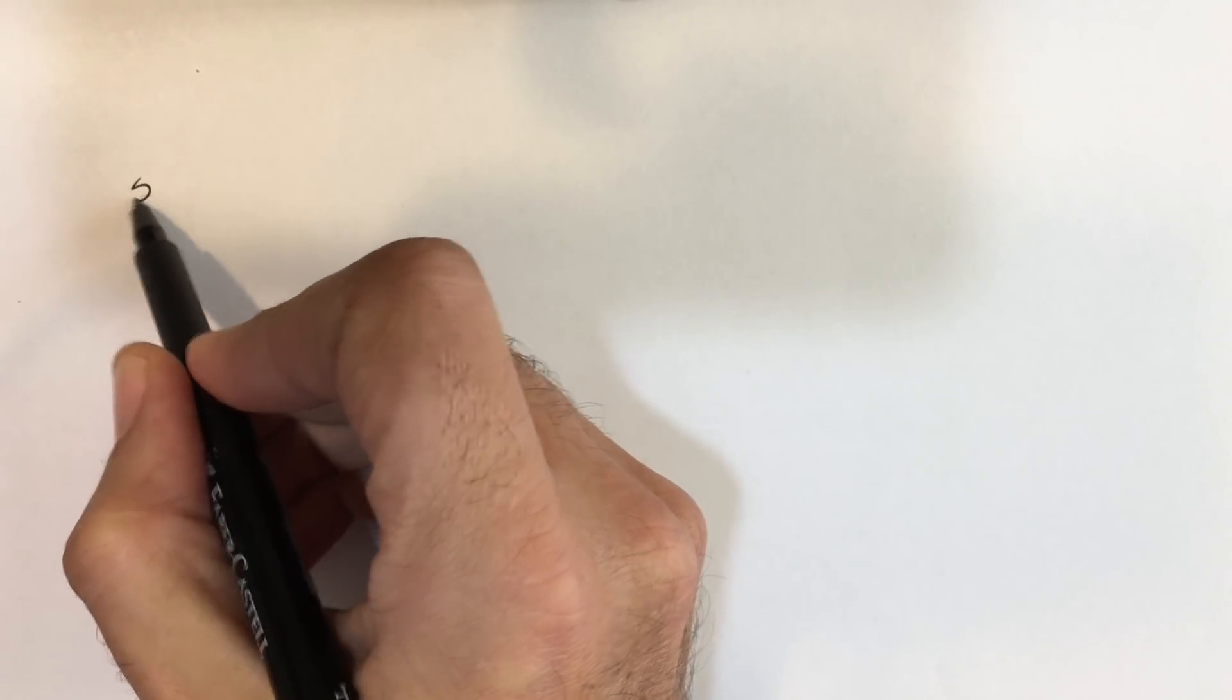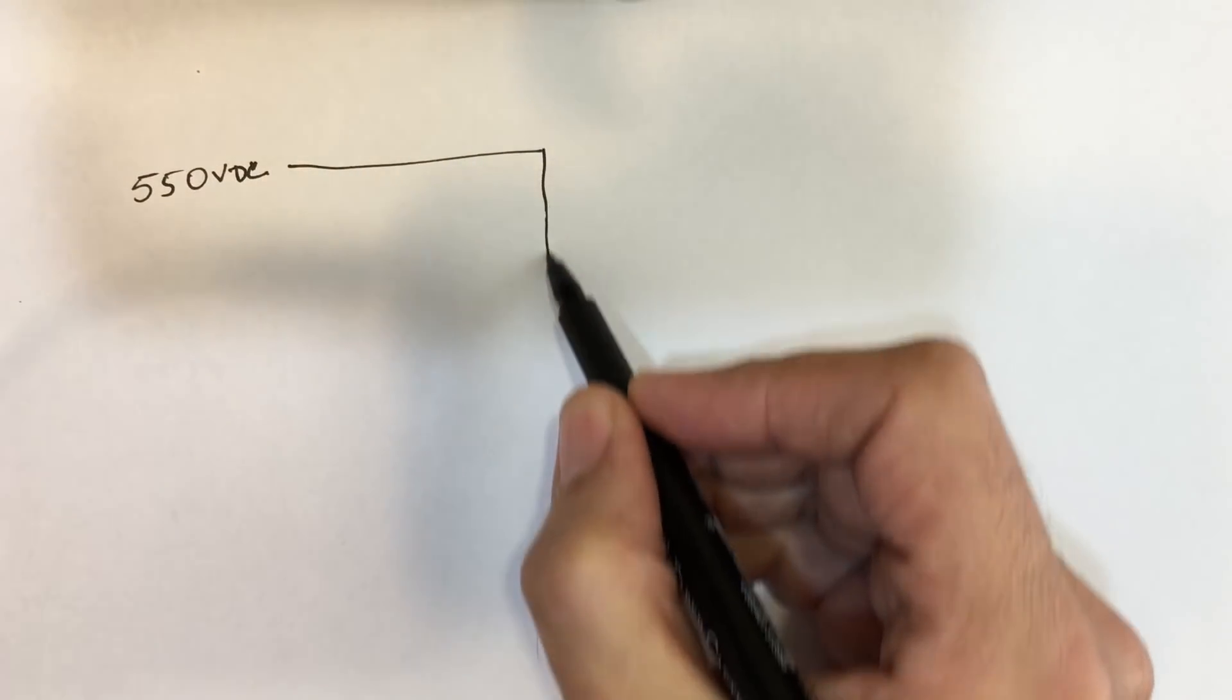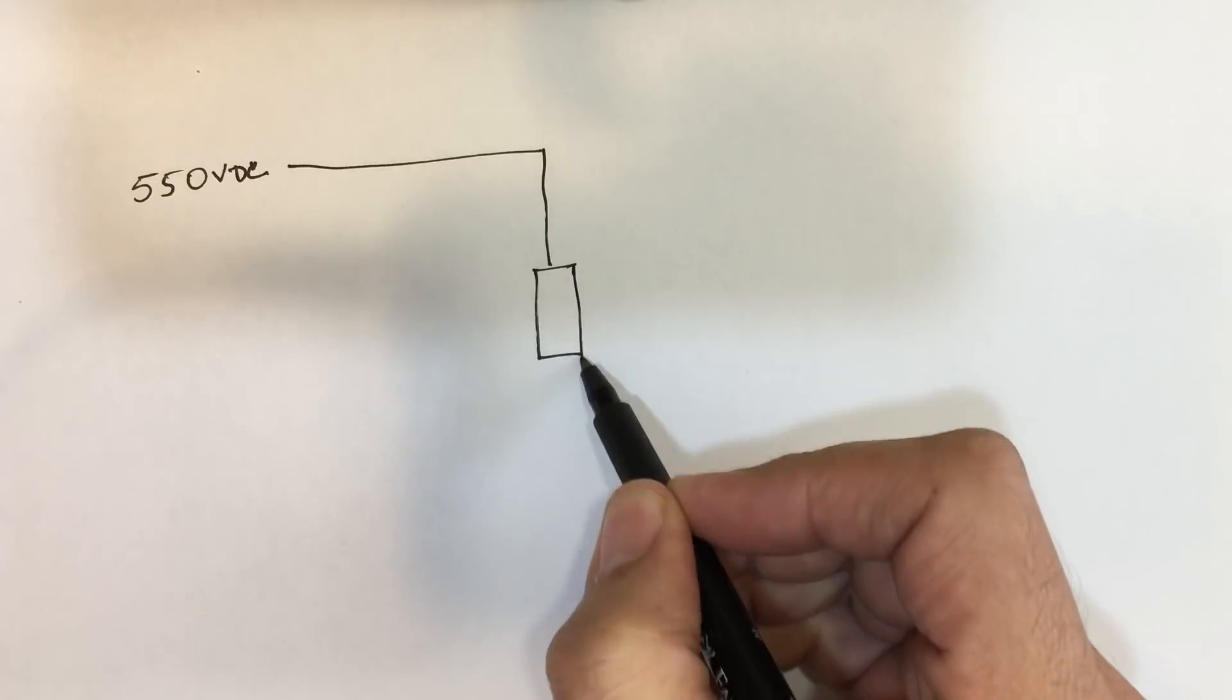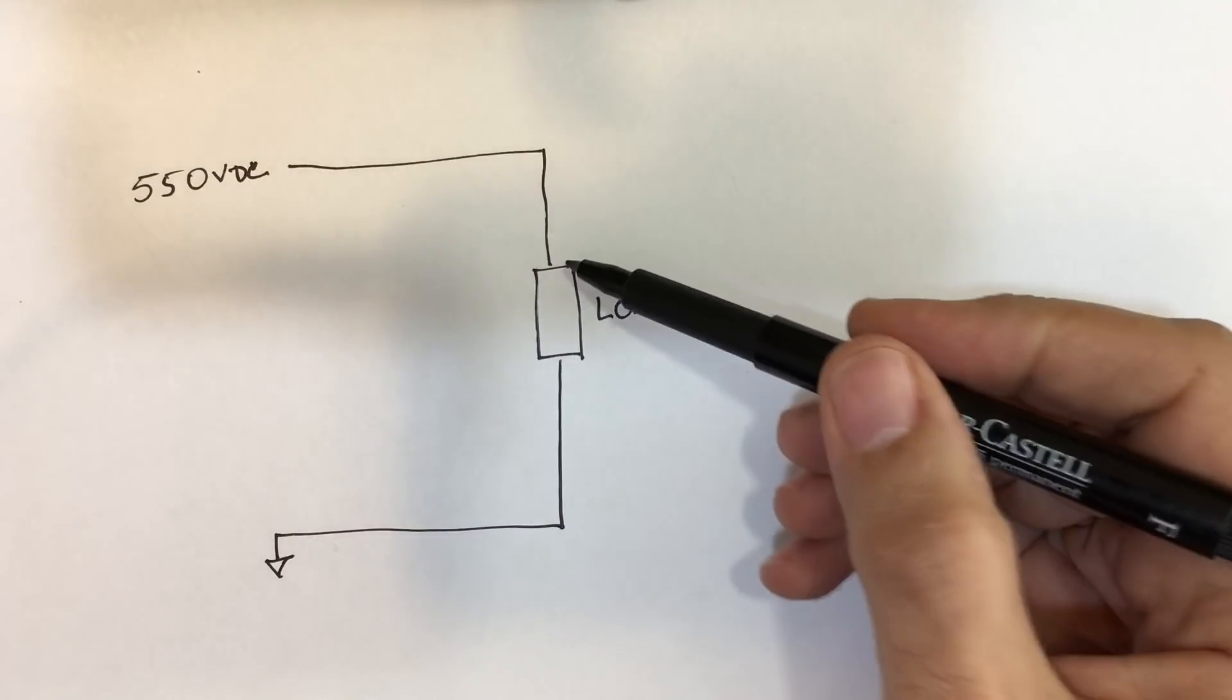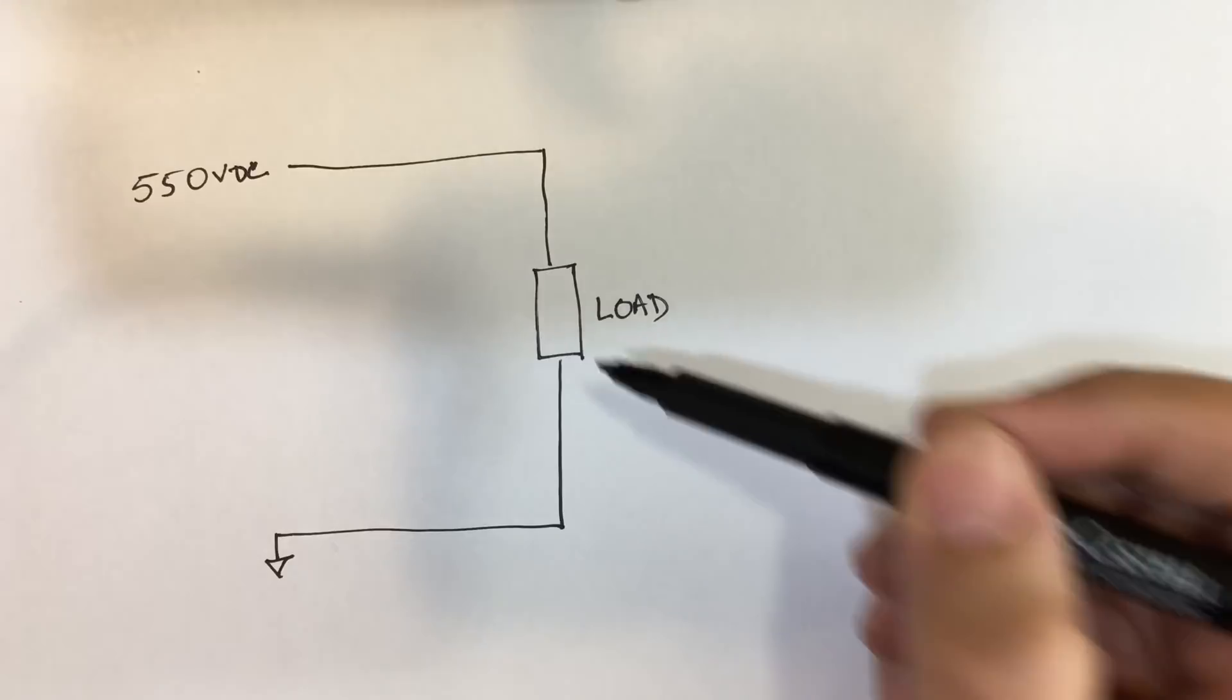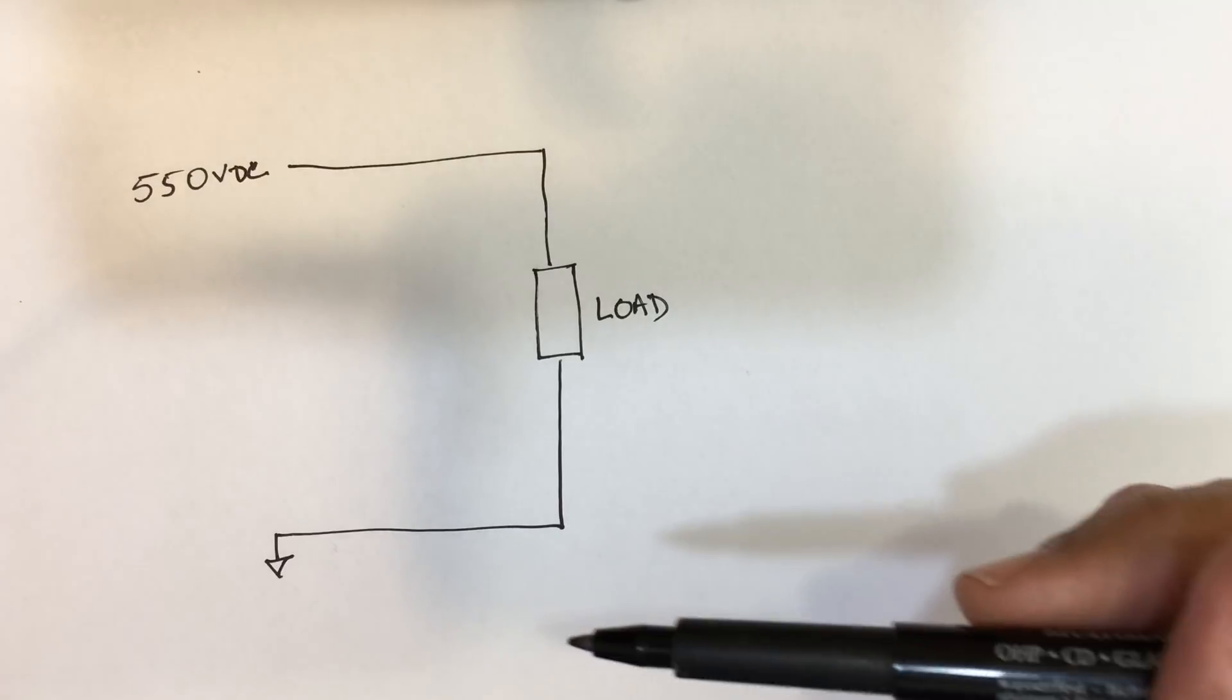So here's our challenge. We've got a voltage of, let's call it 550 volts DC, and we have got this going into the amp. It meets the load, which is the amp itself, and then goes down to ground. Now our problem is that 550 is causing damage to this load. It's too high. So how do we drop 50 volts of this?